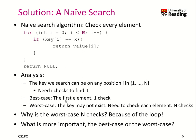Doing a small analysis of this algorithm, the key we search can be at any position — it could be the first element, the last one, or it might not exist at all. We need to check all the elements, but if we find a matching one we can return immediately. So the best case is that the key is the first element, requiring just one check, and the worst case is that the key doesn't exist, requiring n checks.